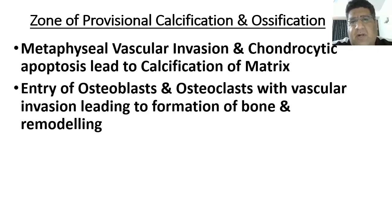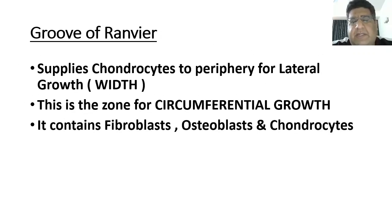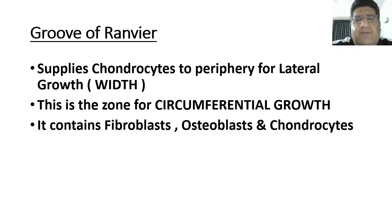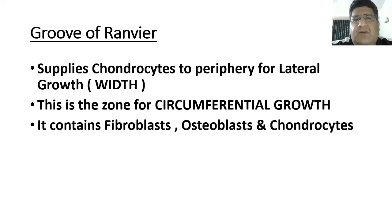Two very important structures need discussion here. First is the groove of Ranvier. This structure supplies chondrocytes to the periphery for lateral — circumferential — growth. If you want width of a bone, chondrocytes are supplied to the periphery through the groove of Ranvier. It contains osteoblasts, fibroblasts, and chondrocytes. The bottom line is that it is the zone for circumferential growth of the bone.